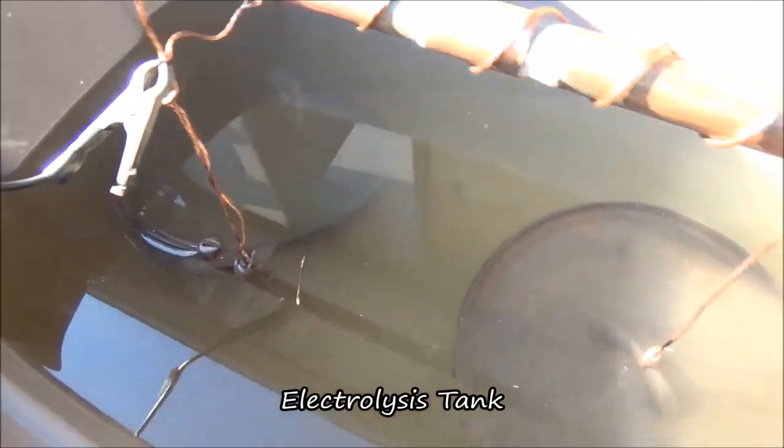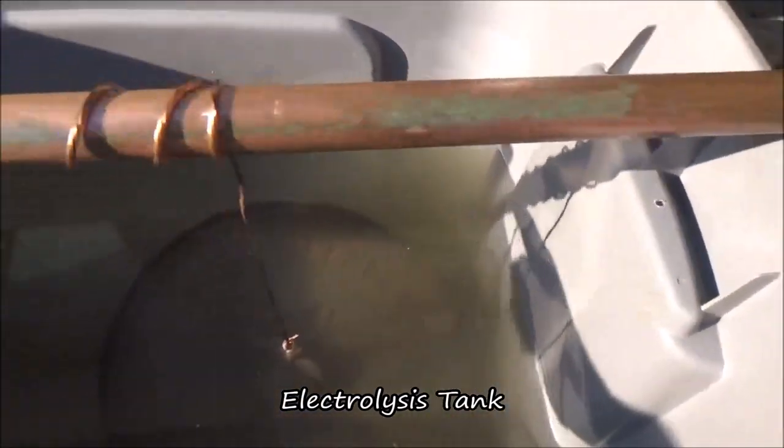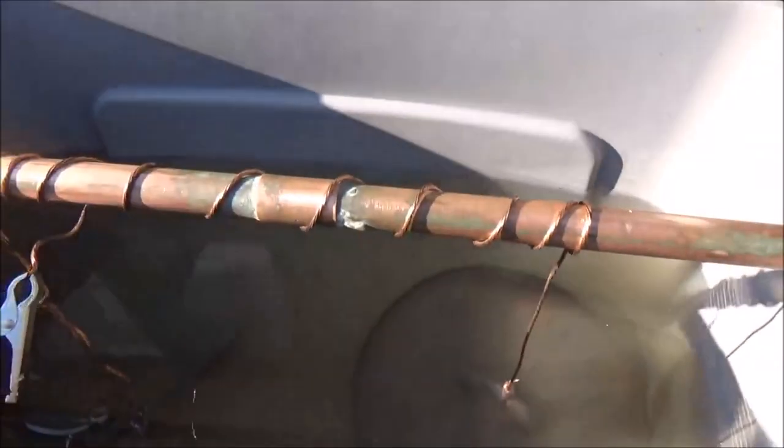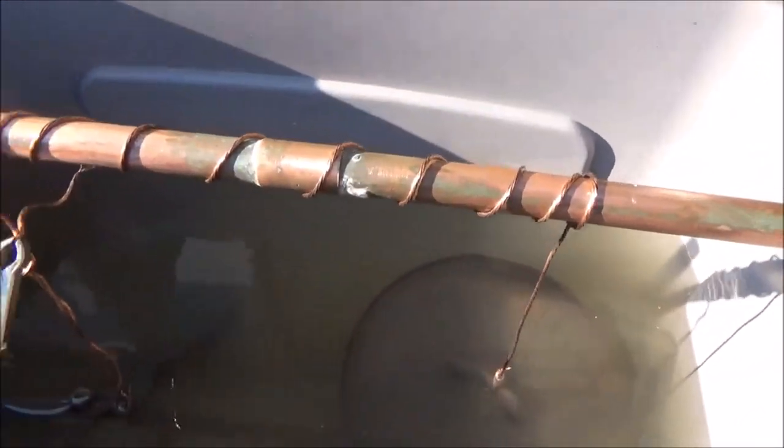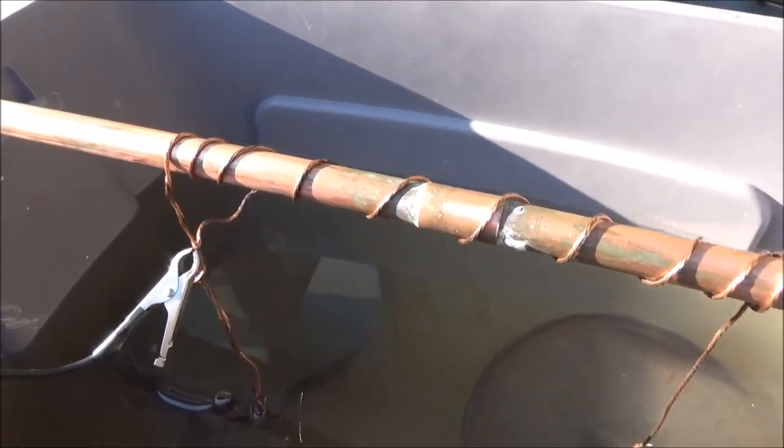Dutch oven pot does not have legs, so it'll work great on our propane burner. We just have a piece of copper pipe across here. That's going to be our cathode and copper wire going down to our pots that are in the solution, which we have soda ash in.